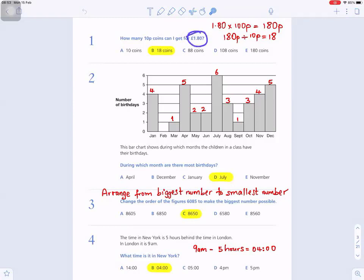One pound 80 - change it to pence by multiplying by 100. When you multiply by 100, move the decimal place two places to the right, it becomes 180 pence. You want to divide 180 pence by 10 pence. Cross out the zero and you get 18, so you can get 18 coins.